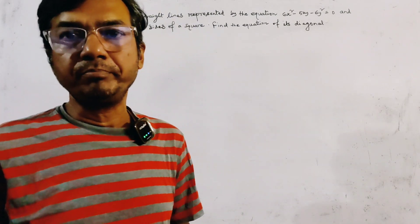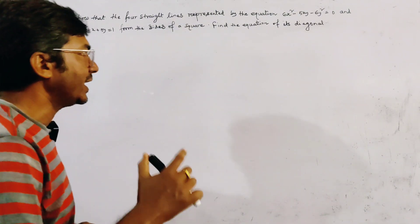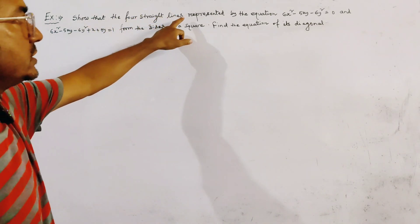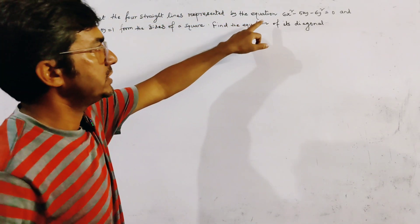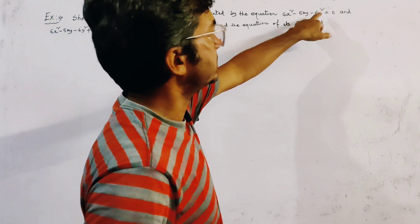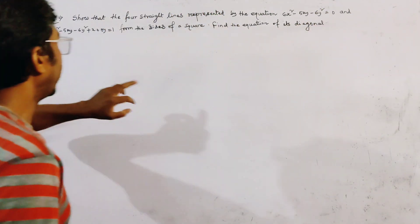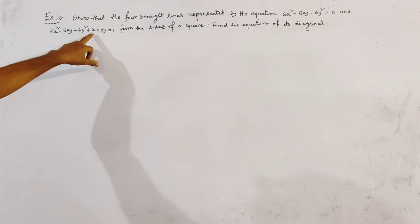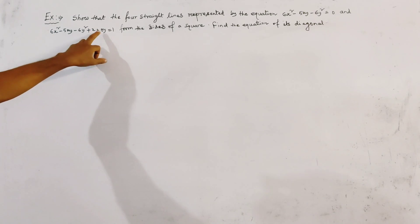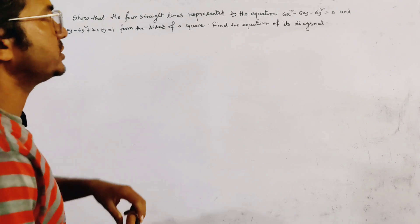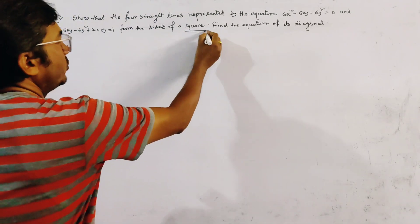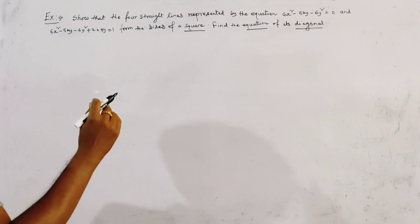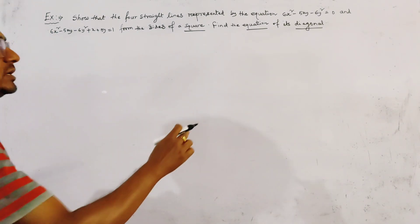A very simple problem from pair of straight lines. Four straight lines are represented by two equations: the first is 6x² - 5xy - 6y² = 0, and the second is 6x² - 5xy - 6y² + x + 5y = 1. These four lines form the sides of a square, and we have to find the equation of the diagonals.